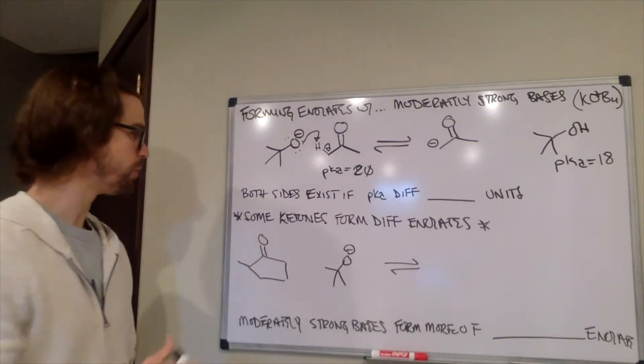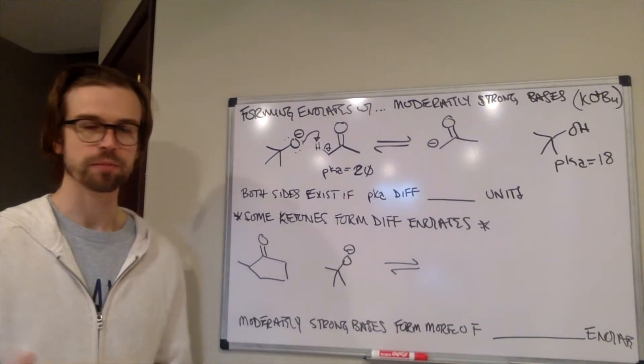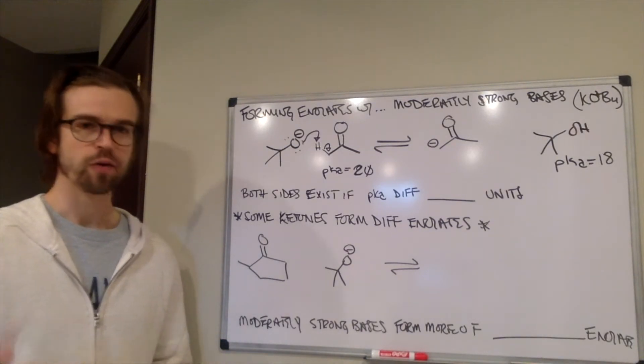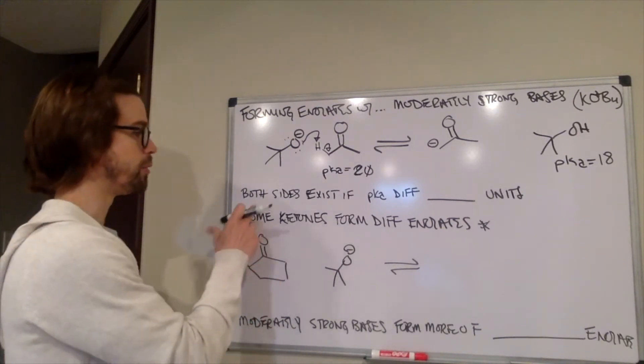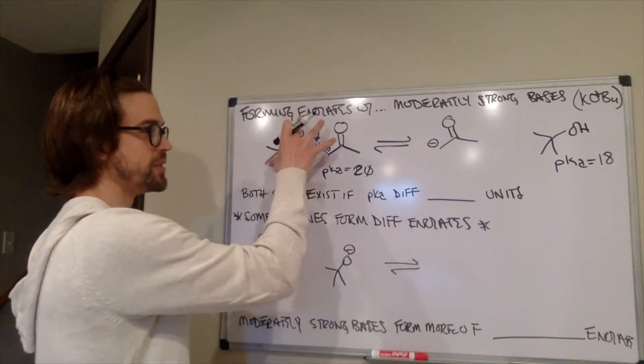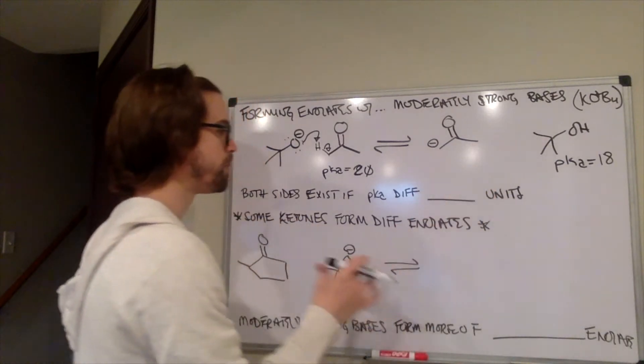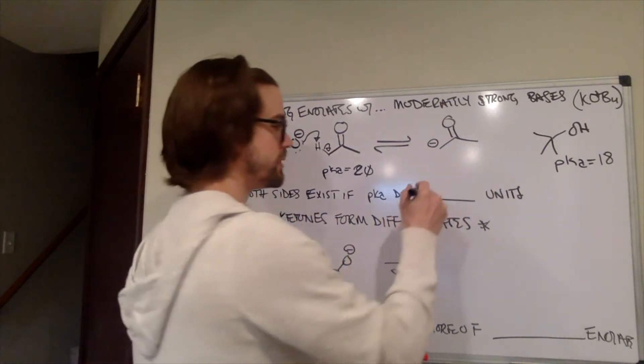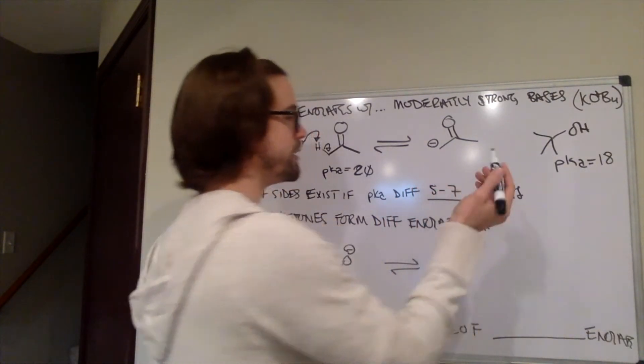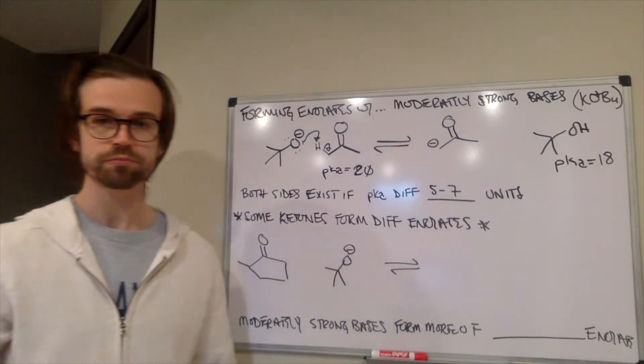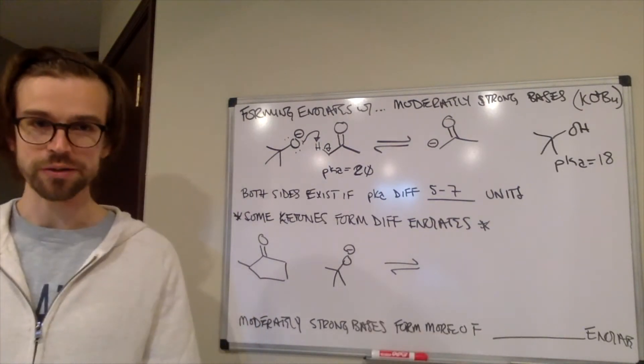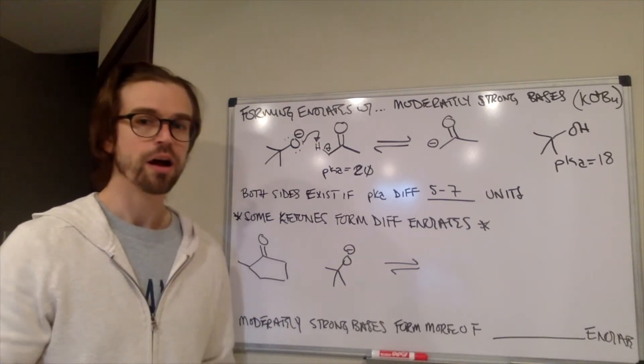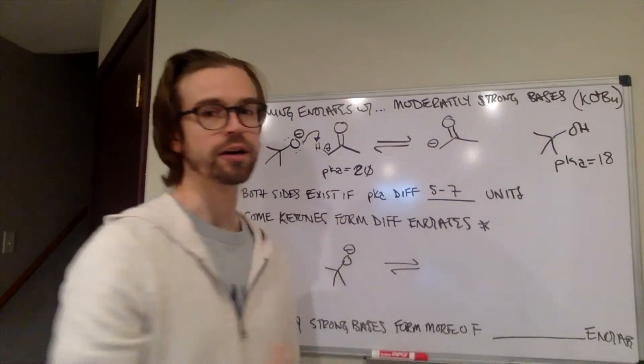And I think I said this before, but essentially how equilibria work is that, especially with acid-base stuff, both sides exist, so there's some amount of material here, some amount of material over here. If the pKa difference is somewhere between five to seven units, it can be pretty substantially different, seven units is a pretty substantial amount, but still have some amount of the material over here.